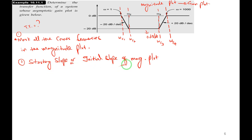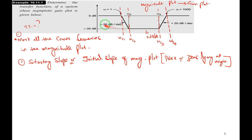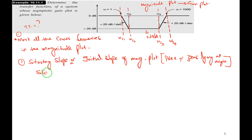Step 3: Find K. At ω = 1, observing the magnitude plot, the value is 0 dB — there is no shift. So 20 log K = 0, which gives log K = 0, and therefore K = 10⁰ = 1. The system gain K = 1. Since log 1 = 0, there is no shift; the 0 dB line itself is the reference.